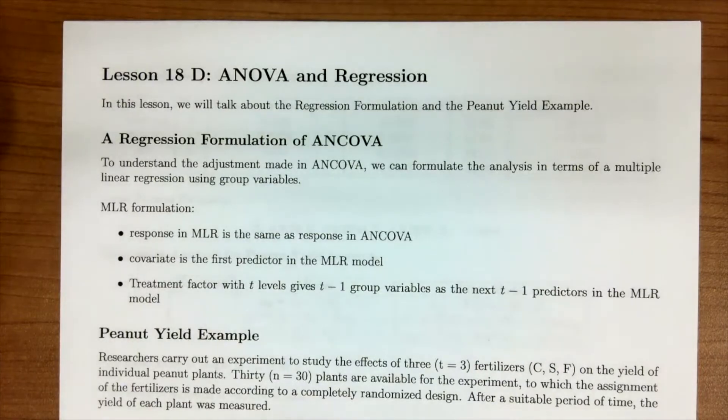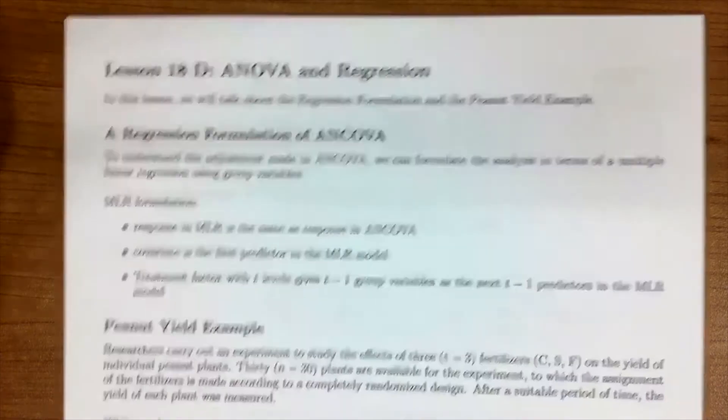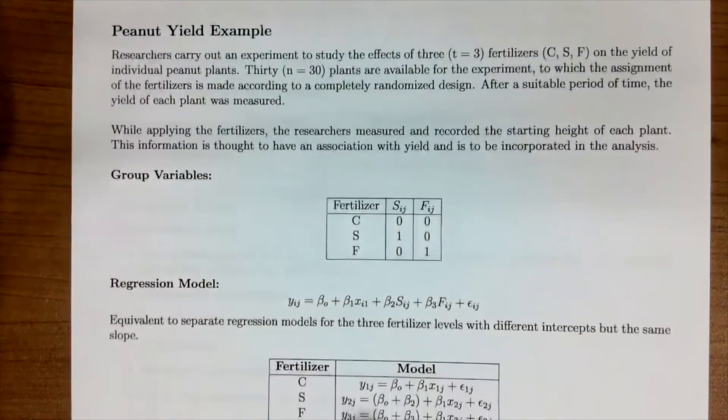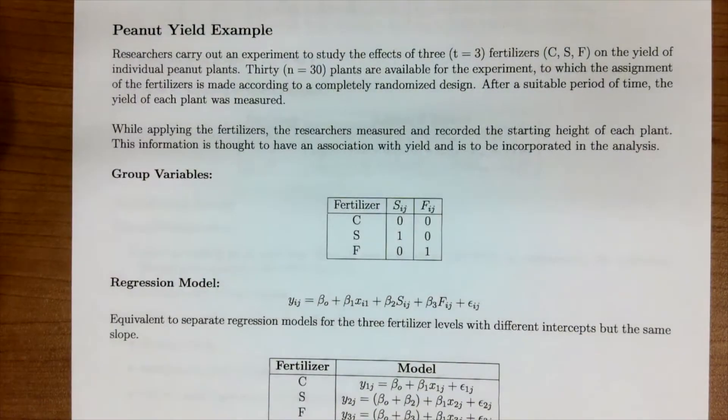So to understand this a little bit more, let's go back to our peanut yield example. Again, this is where we're trying to understand the effect of three fertilizers on the yield of individual plants. We have 30 plants and we have our covariate of the starting height of the plant and we're interested again in seeing if there's a difference in the fertilizers.